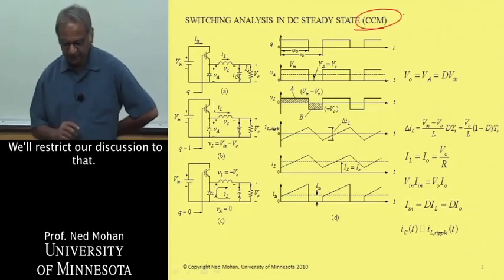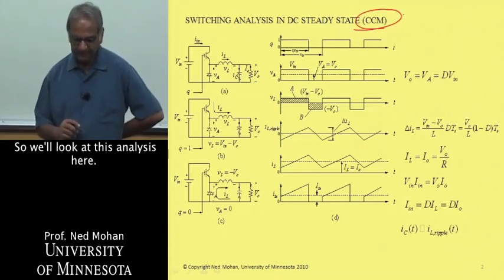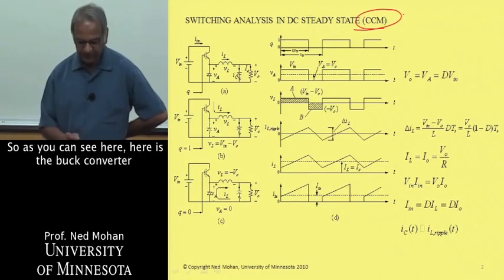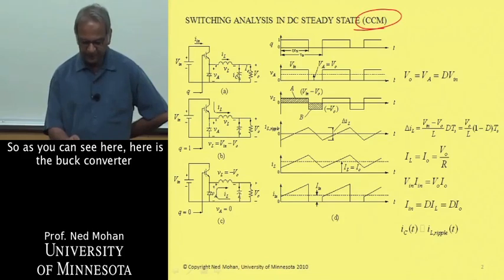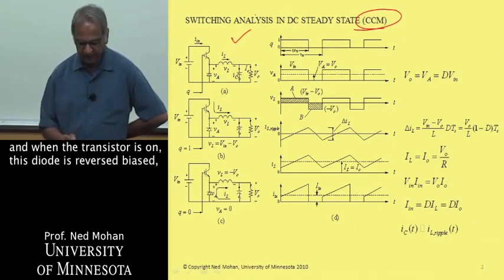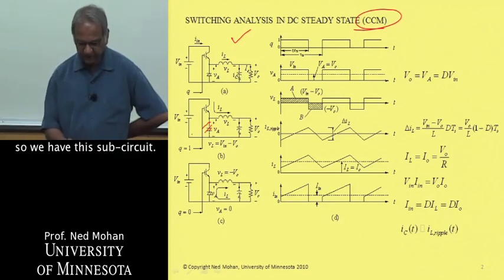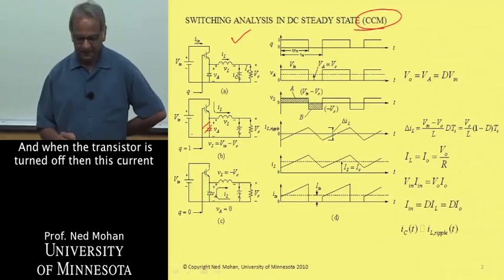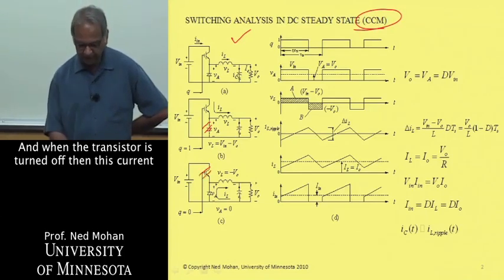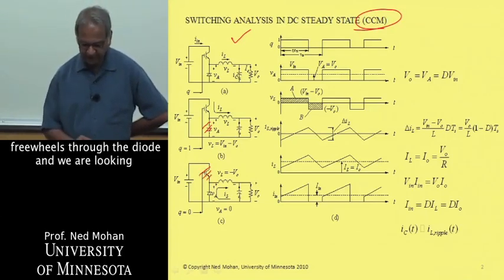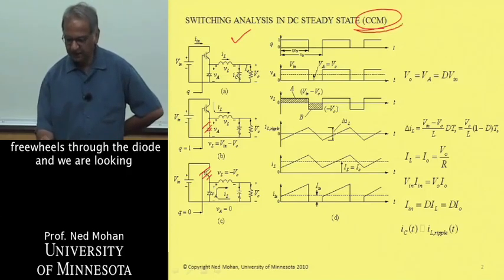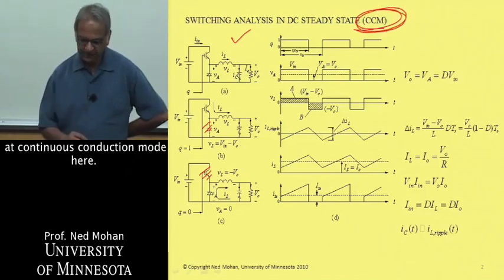So we'll look at this analysis here. As you can see, here is the buck converter, and when the transistor is on, this diode is reverse biased. So we have this sub-circuit, and when the transistor is turned off, then this current freewheels through the diode, and we are looking at continuous conduction mode here.